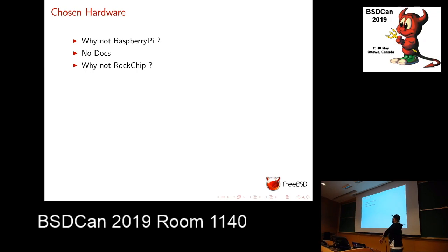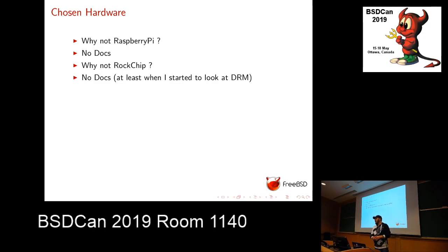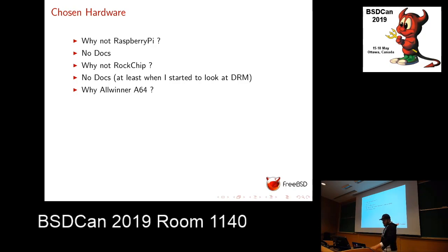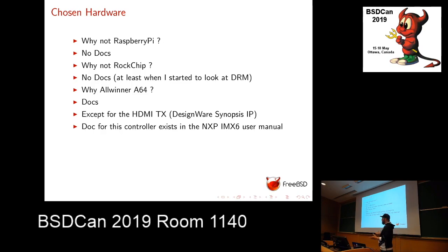Why not Rockchip? Because we start to have a core port on Rockchip, but it's the same — there are no docs. At least when I started to look at DRM, I couldn't find any docs. I know there's a doc for an older version of their display engine that seems similar to the new one, so maybe someday I'll look at it more closely. Why Allwinner? Well, there are docs — except for the HDMI transmitter. But that doc exists in another manual, on the NXP IMX6. So you have three PDFs open, but at least you have everything documented.